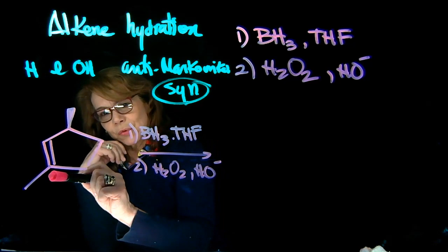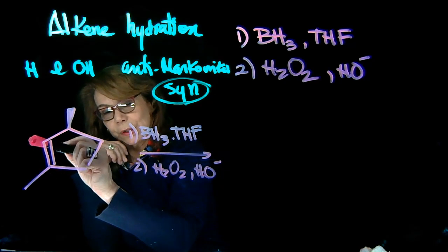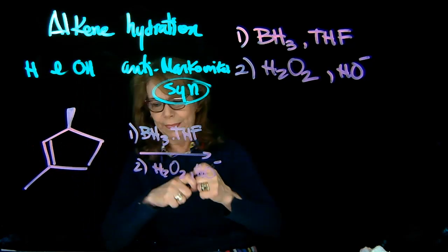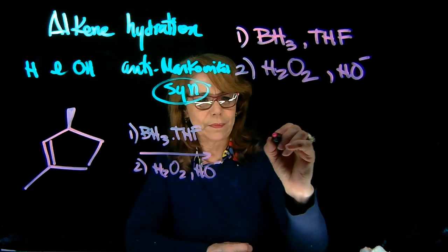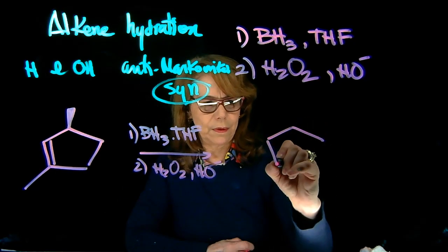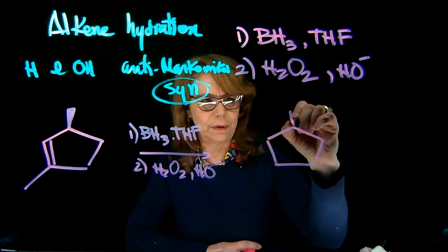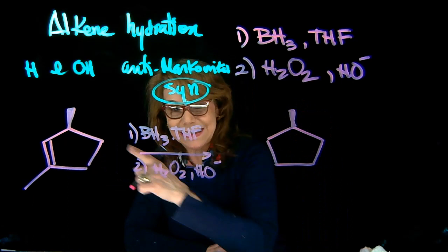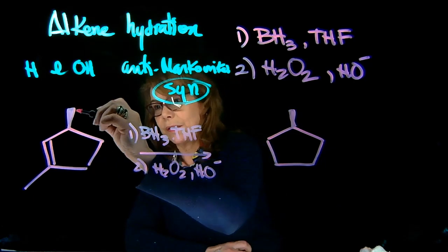Because we know this is anti-Markovnikov, we know the H is going to be at the more substituted carbon and here's where you're putting the OH. Let's draw the products. We're not touching this chiral center - notice we have one, two, three substitutions plus a hydrogen, so four different groups, it is a chiral center.